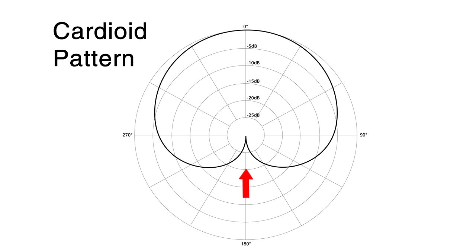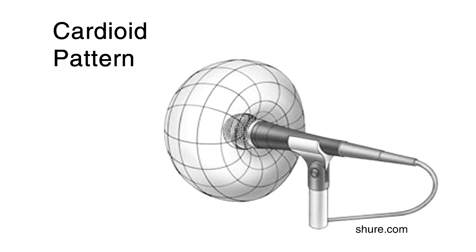Now cardioid mics are good for picking up sound in one primary direction and excluding sound coming from behind the mic. This sound can be other instruments, the monitor, reflections from the recording space, anything that might interfere with the sound you're trying to capture. Here's a representation of this pattern in three dimensions. It's important to remember that the polar plot is essentially a 2D slice of the real three dimensional pickup pattern.